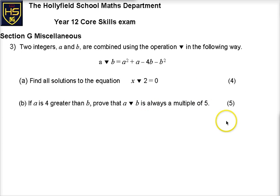Let's go over the page and look at part B. It says, if A is 4 greater than B, prove that A triangle B is always a multiple of 5. What is A triangle B? Well we know it's A squared plus A minus 4B minus B squared. But we're also told this key piece of information A is 4 greater than B.